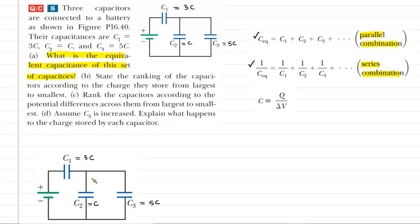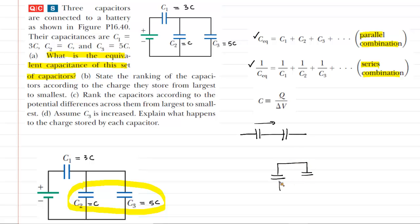To get things started, let's consider these two capacitors. You want to ask yourself: are those in series or are those in parallel? If they were in series, they would basically be right next to one another in a continuous line. If they're in parallel, then there is some sort of junction between them. C2 and C3 — hopefully it's clear that those are indeed in parallel with one another.